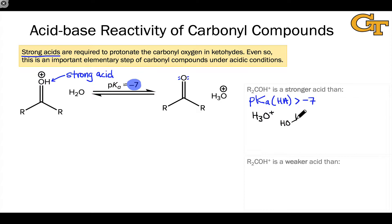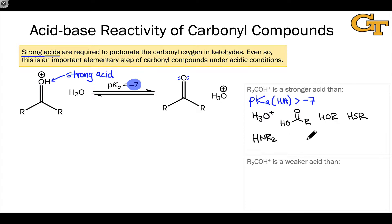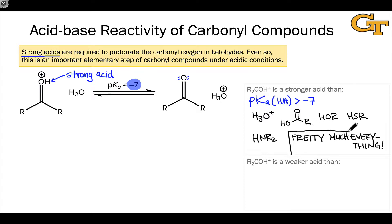This includes carboxylic acids, alcohols, thiols, amines, HNR₂ — essentially everything. We can put pretty much everything in a box. The only things that can protonate a neutral carbonyl group are very strong acids, focusing on ketones and aldehydes.